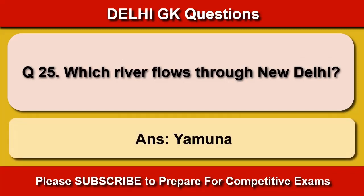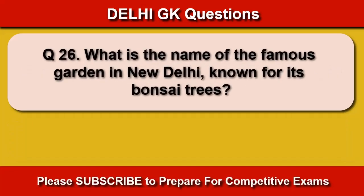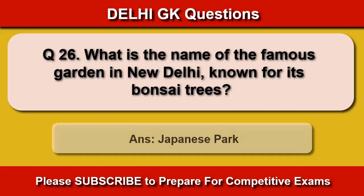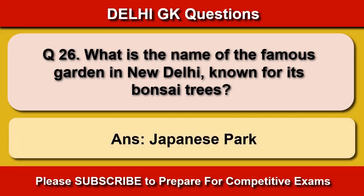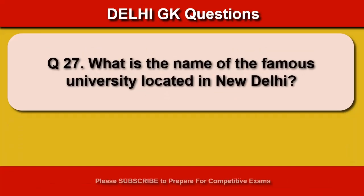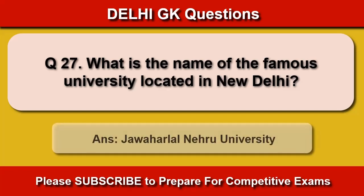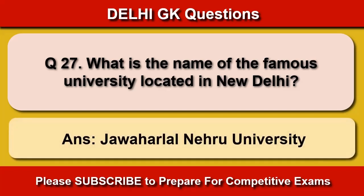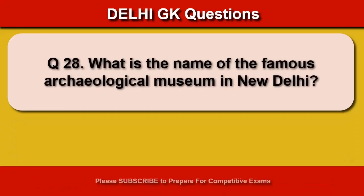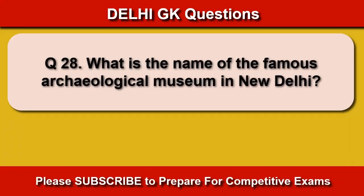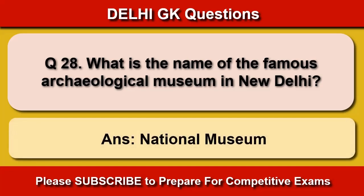Which river flows through New Delhi? River Yamuna. What is the name of the famous garden in New Delhi known for its bonsai trees? Japanese Park. What is the name of the famous university located in New Delhi? Jawaharlal Nehru University. What is the name of the famous archaeological museum in New Delhi? National Museum.